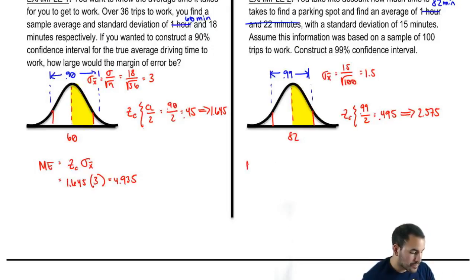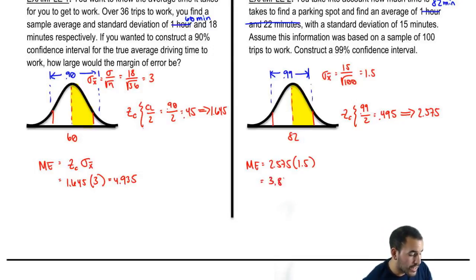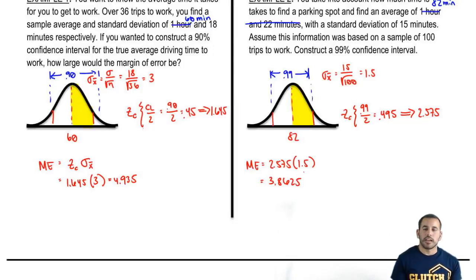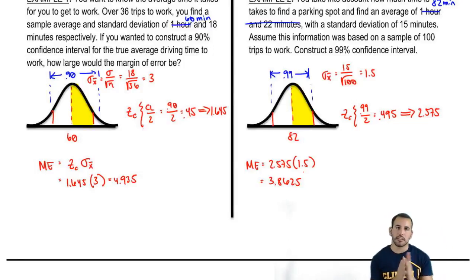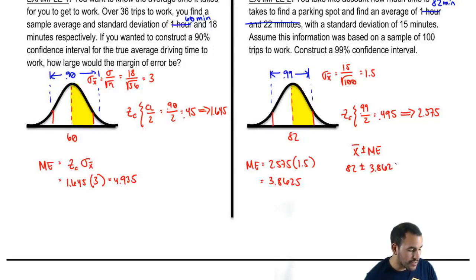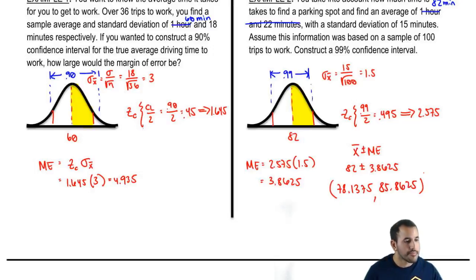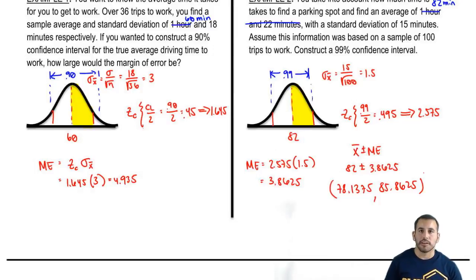Next step, let's get our margin of error. Our margin of error is the Z critical times the standard error: 2.575 times 1.5, giving us a margin of error of 3.8625. Now we have the margin of error, so all we have to do is the mean plus that margin of error and the mean minus that margin of error — x-bar plus or minus 3.8625. So we get 82 plus or minus 3.8625, which gives us 78.1375 and 85.8625. That's about it for confidence intervals.